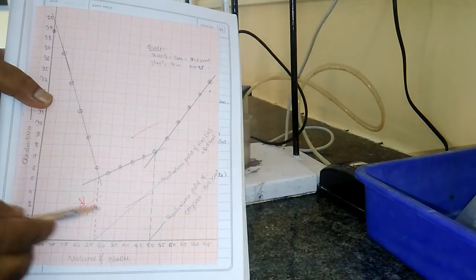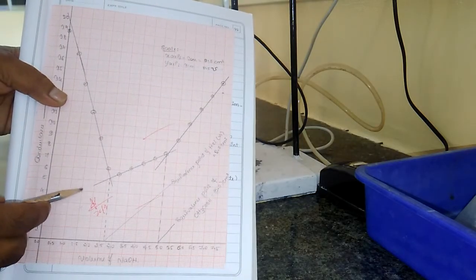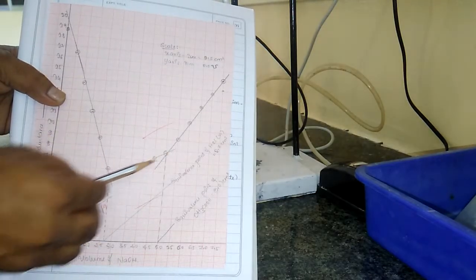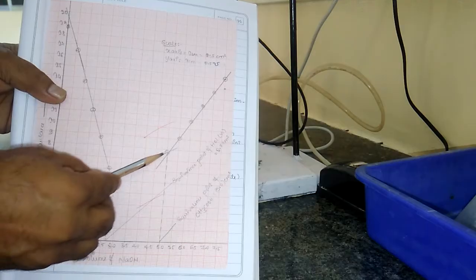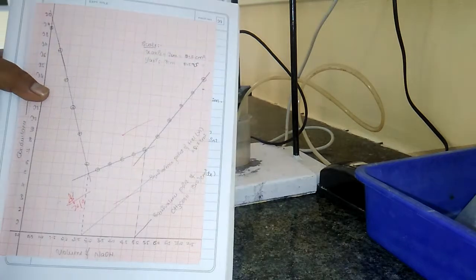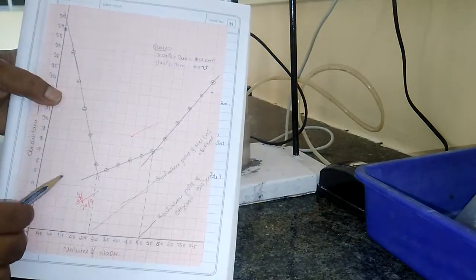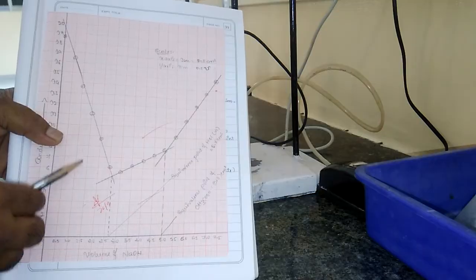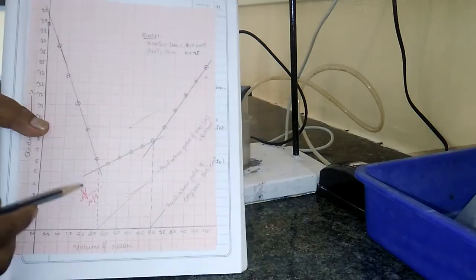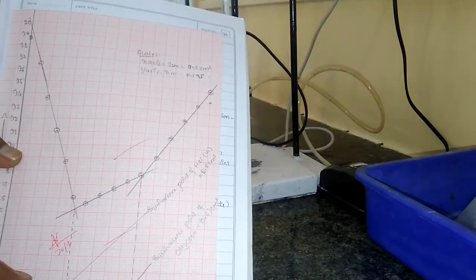Whenever the complete neutralization of hydrochloric acid is over, the weak acid begins to neutralize. At the end, sodium acetate salt will be formed, which is a strong electrolyte — therefore it gradually rises. Whenever the neutralization of the weak acid also gets over due to the addition of NaOH, the hydroxide ions cause it to rise suddenly. The three straight lines are obtained here. The point of intersection of the first and second lines gives the equivalence point of hydrochloric acid. Similarly, the intersection of the second and third curves gives the equivalence point of the weak acid.